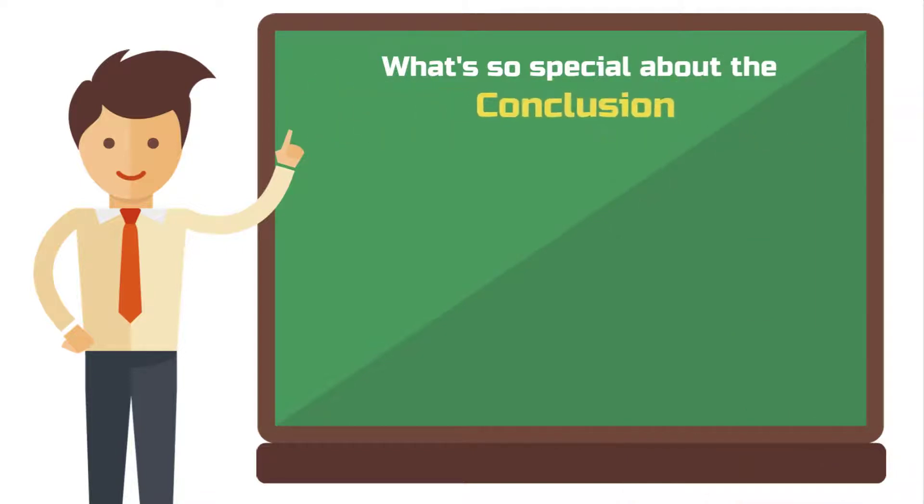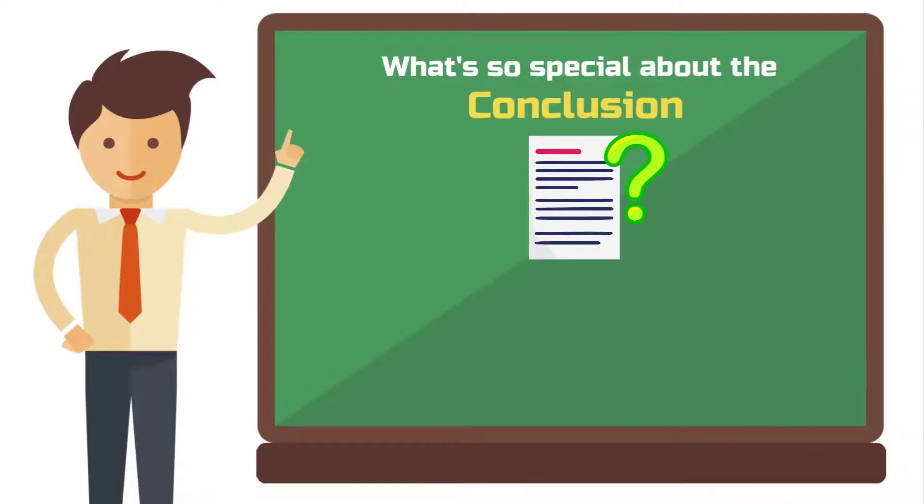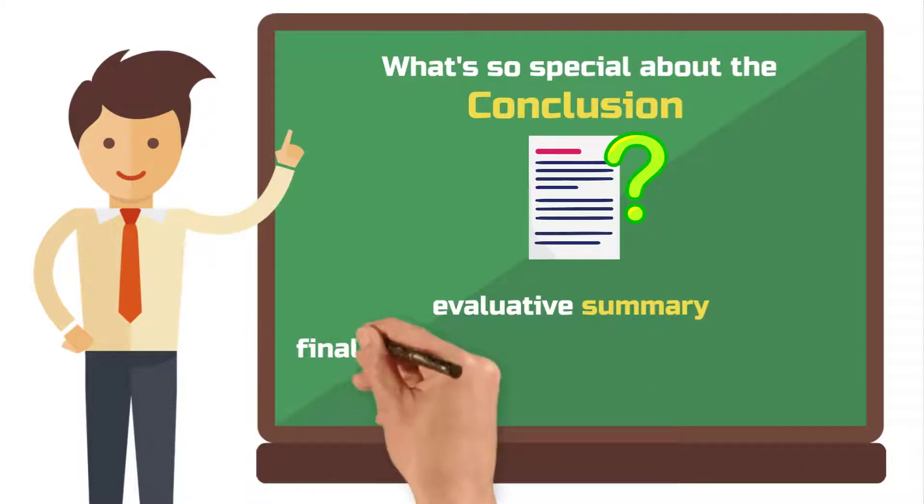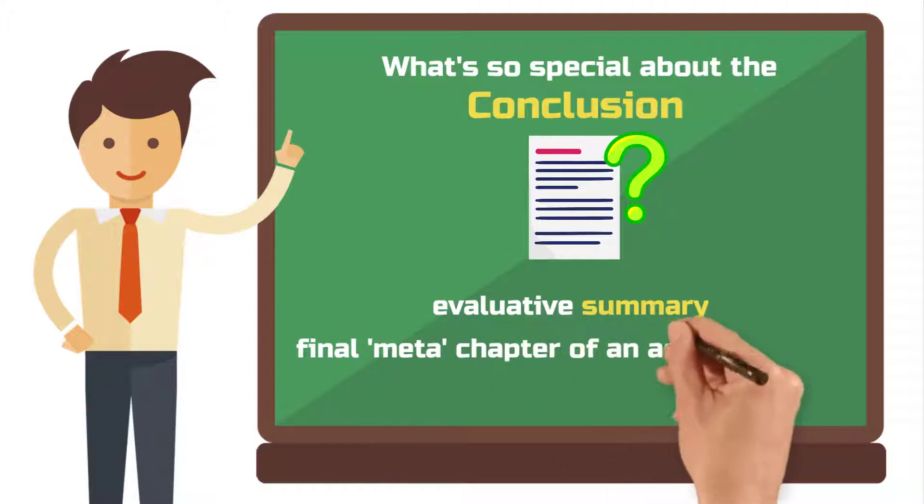Sometimes instead of conclusion the terms resume or outlook appear in the academic vocabulary. To cut to the chase, a conclusion is meant to be an evaluative summary of your work. It is one of the main pillars of an academic paper and requires a lot of attention. In the conclusion you are required to present the results of your work and demonstrate your reader why your work was sensationally good.